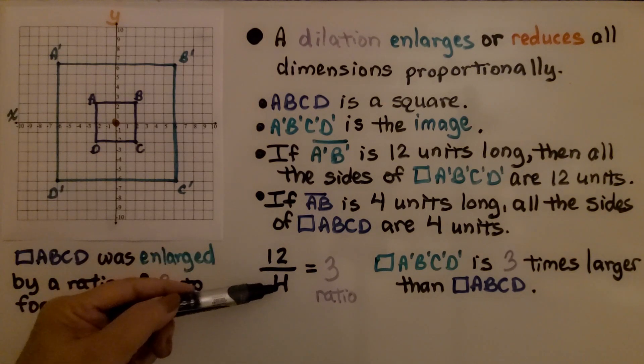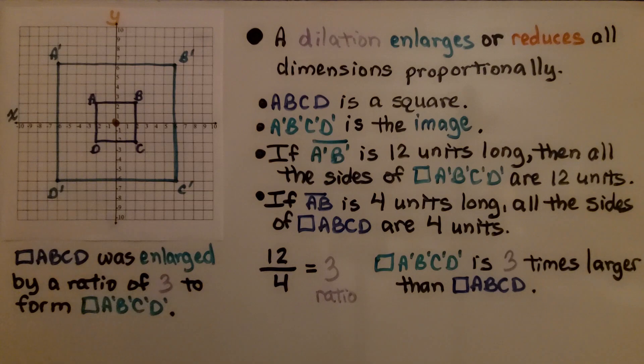We can do 12 divided by 3 to find the ratio is 3. Square A'B'C'D' is 3 times larger than square ABCD. Square ABCD was enlarged by a ratio of 3 to form square A'B'C'D'.